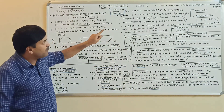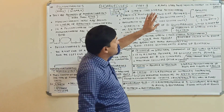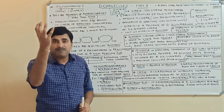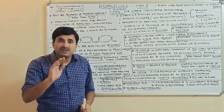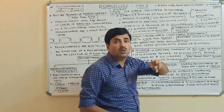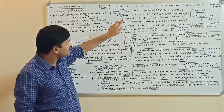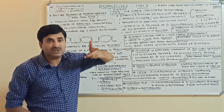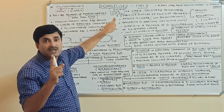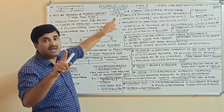Now we will discuss starch, the most common homopolysaccharide. Plants store their chemical energy — absorbed from sunlight as radiant energy — in the form of starch. So starch is the stored food material of the plant. When we do the starch test, starch will always give a blue color with iodine. Starch is a food storage polysaccharide.